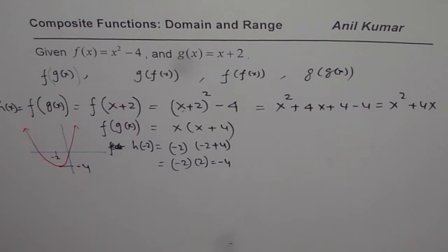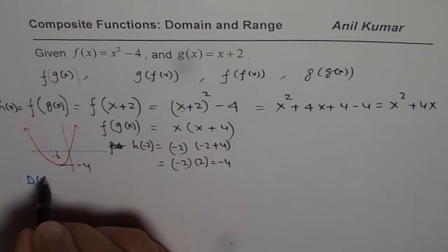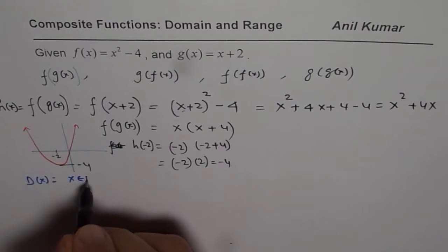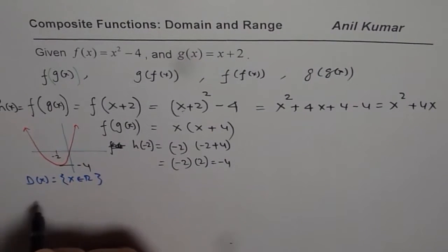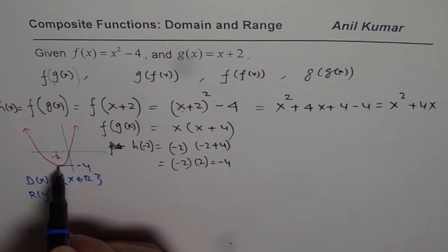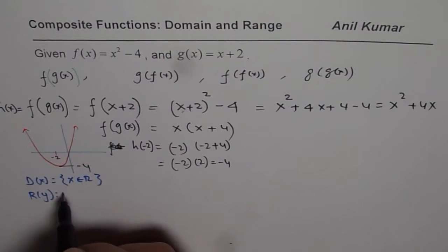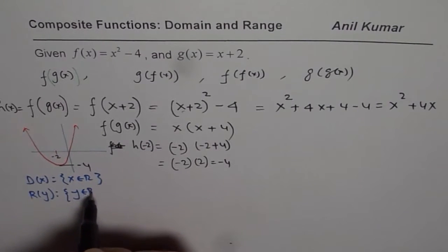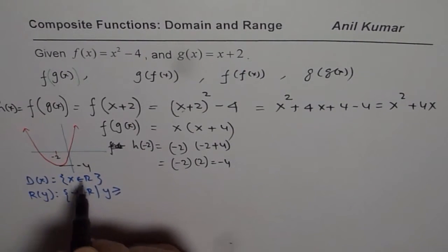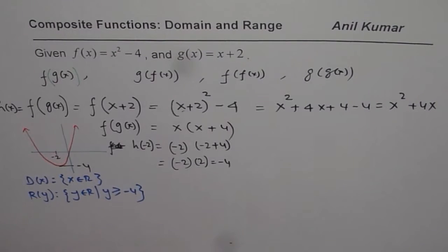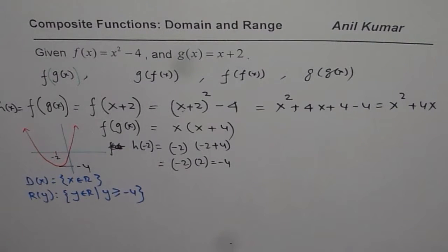Now from here we can write down that the domain is all real numbers. It is a parabola, so domain d of x is x belongs to real numbers. No restrictions at all. But as far as the range is concerned, because this vertex is at minus 2, minus 4, range is y belongs to real numbers where y is greater than equals to minus 4. That is how we get domain range of this particular function.